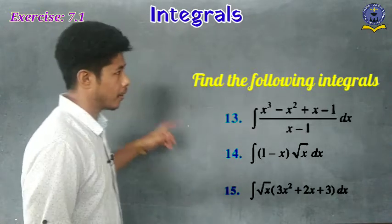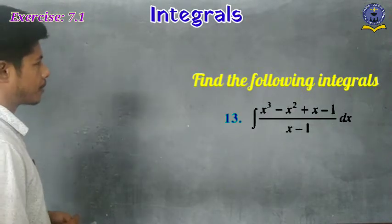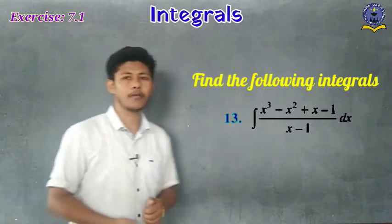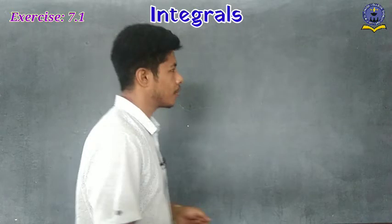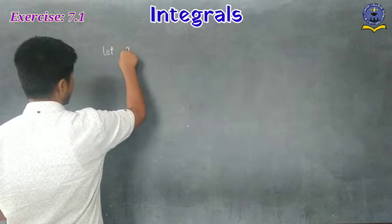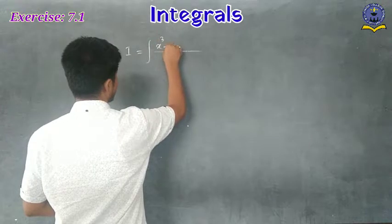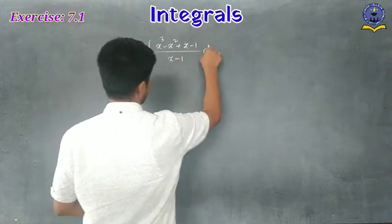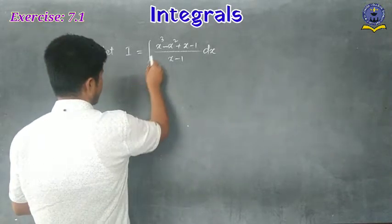The first question is: integration of (x³ - x² + x - 1) divided by (x - 1) dx. We have to integrate this expression. Let us consider I equals the integral of (x³ - x² + x - 1) divided by (x - 1) dx.